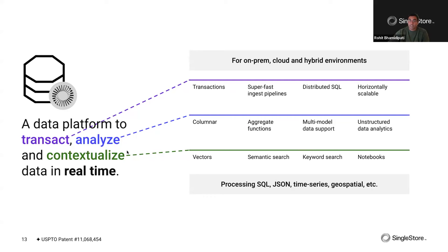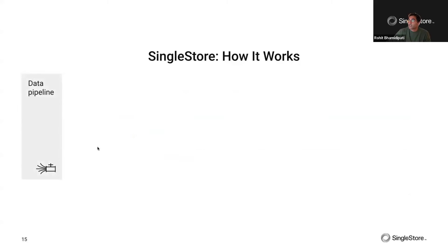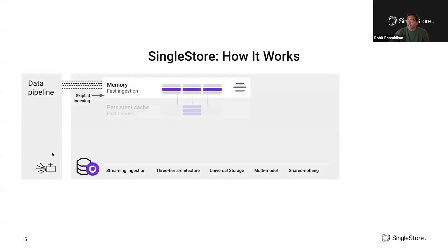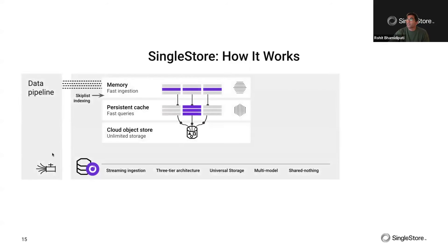So those are the three main points of SingleStore: transactions at scale, analytics at scale, and vector search for all different types of applications. SingleStore can be deployed on-prem, in the cloud on any major cloud provider, and in hybrid environments.